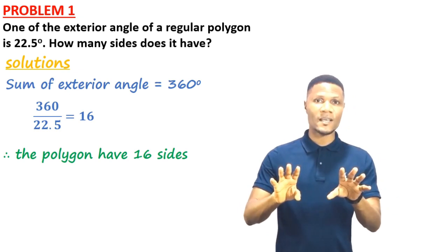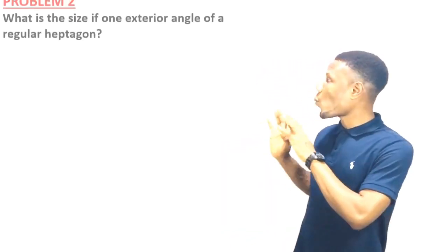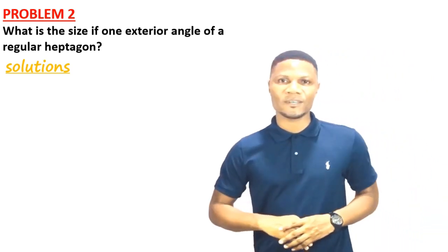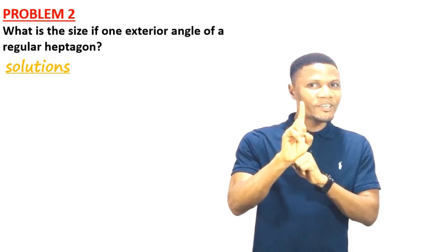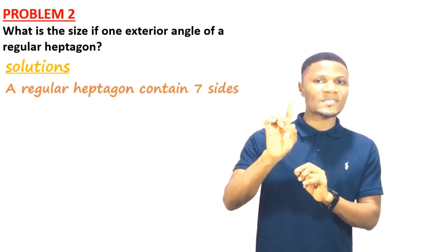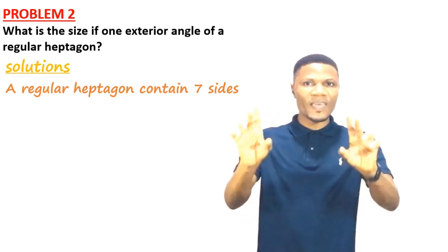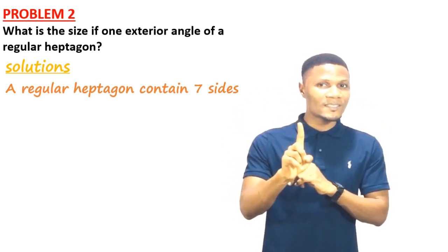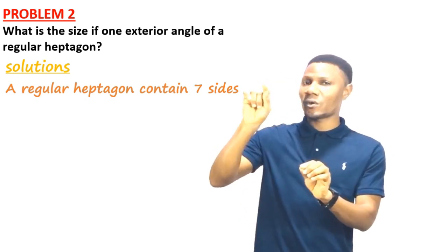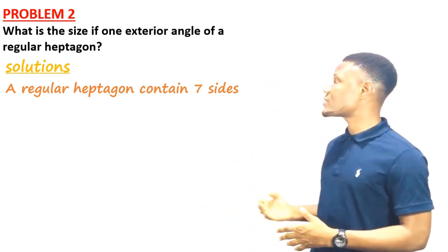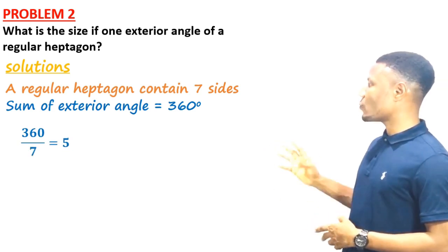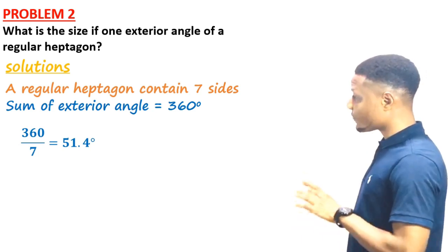Problem 2: What is the size of one exterior angle of a regular heptagon? A regular heptagon has 7 sides, and the sum of exterior angles of any polygon is 360°. So we do 360° ÷ 7, which gives us 51.4°. One exterior angle of a regular heptagon is 51.4°.